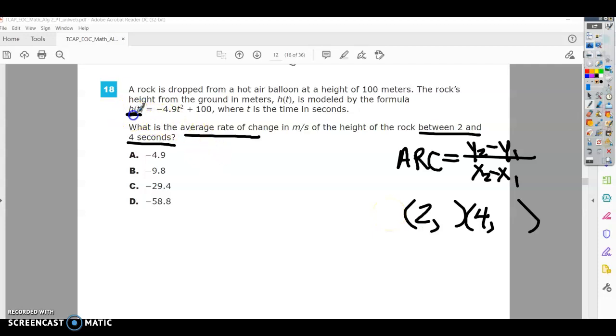So h of t is the same thing as y. So I can write y equals negative 4.9 and t squared. First one I'm going to plug in is 2 squared plus 100. So it's going to be negative 4.9 times 4 plus 100.